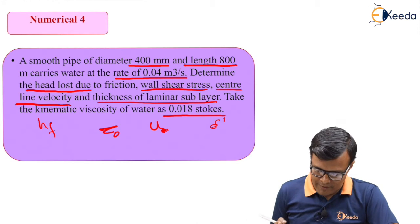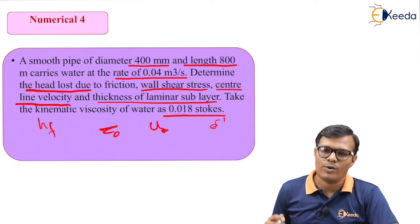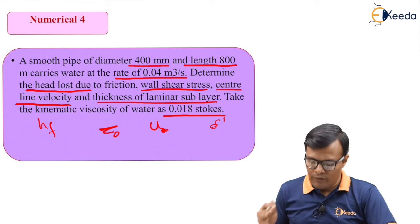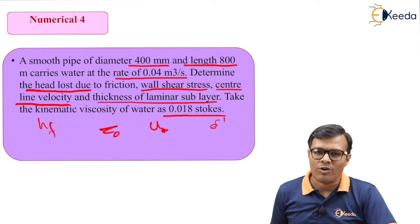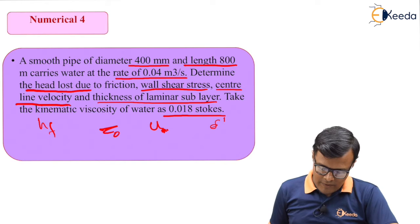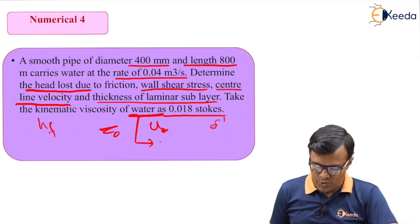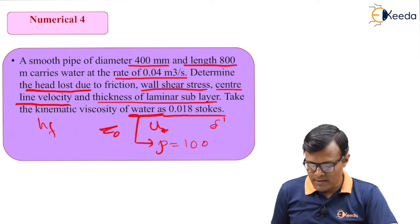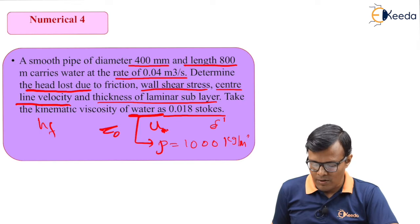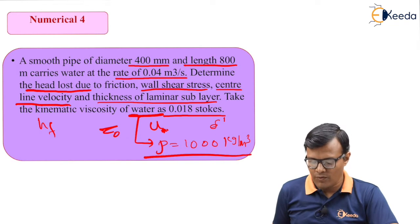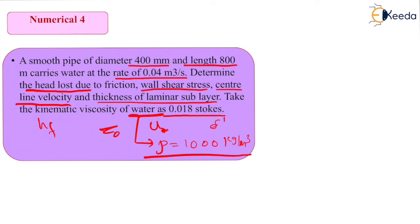Generally water has kinematic viscosity of 0.018 to 0.015. If it is not given then we can consider it. If it is mentioned that it is water, rho for water is 1000 kg per m³. This is also a value indirectly given to us. So let's start with given data.